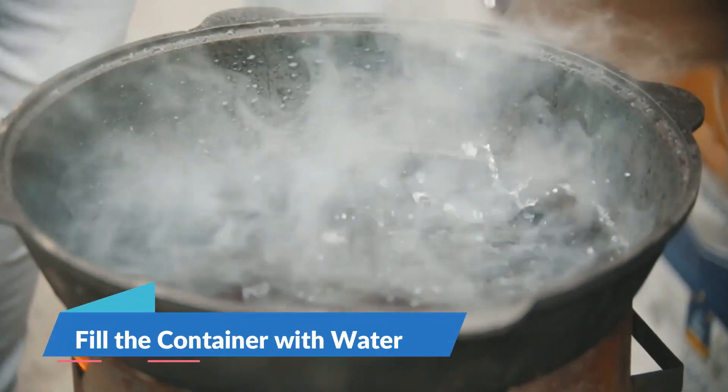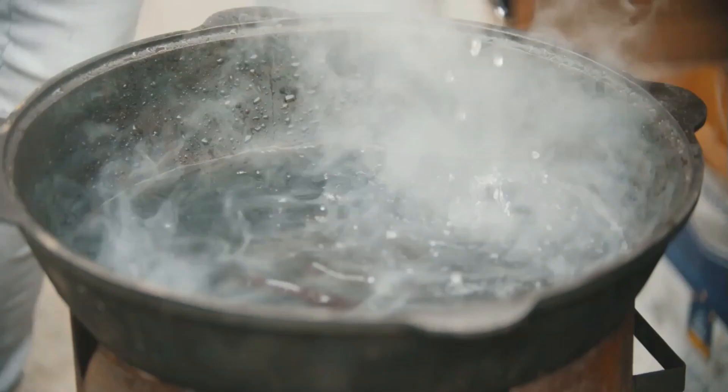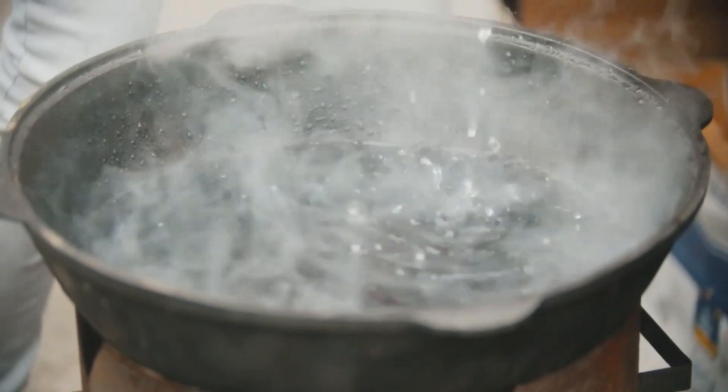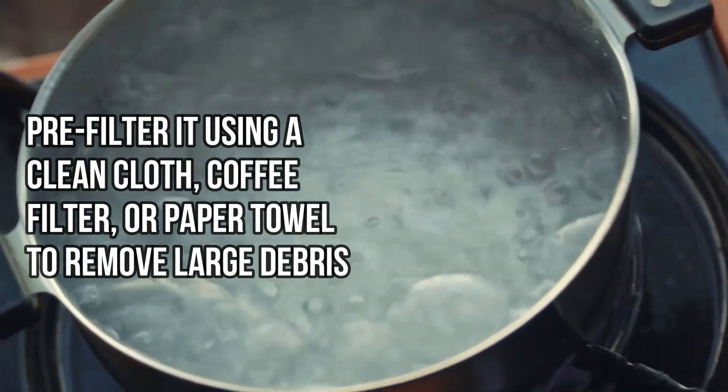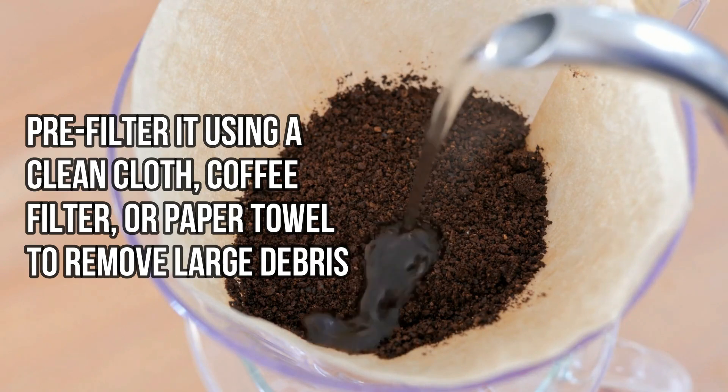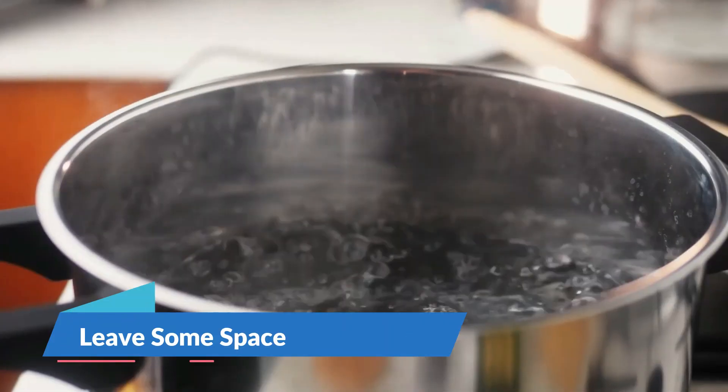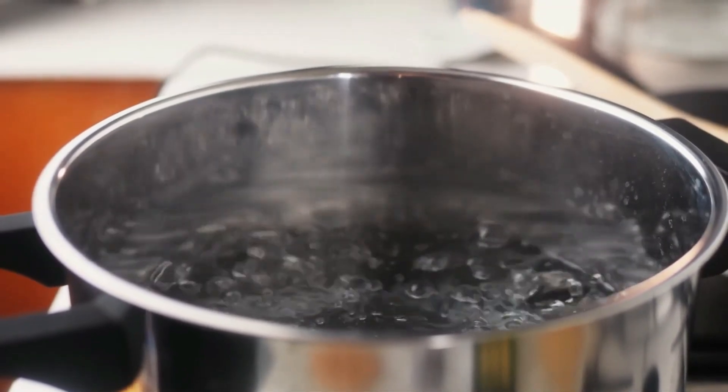Step 2: Fill the container with water. Source water: Fill the container with water from your source. If the water is visibly dirty or has particulates, pre-filter it using a clean cloth, coffee filter, or paper towel to remove large debris. Leave some space: Do not fill the container to the brim. Leave some space at the top to prevent boiling water from spilling over.